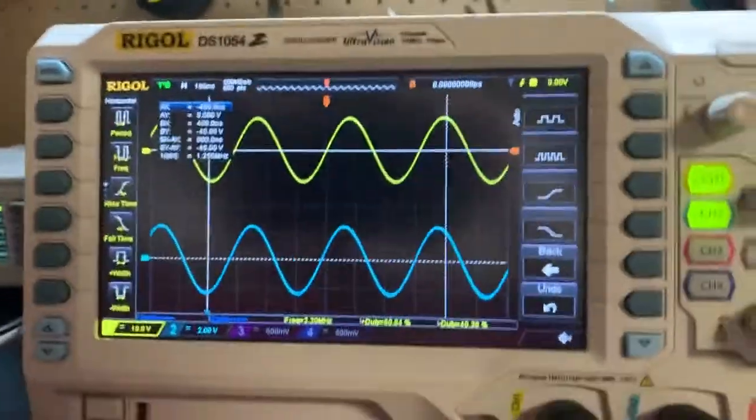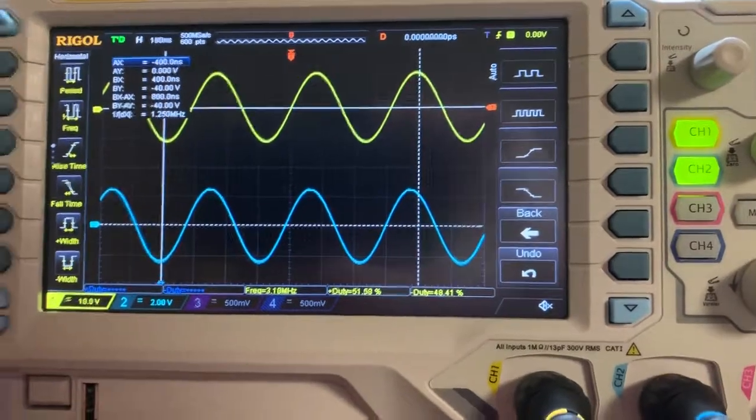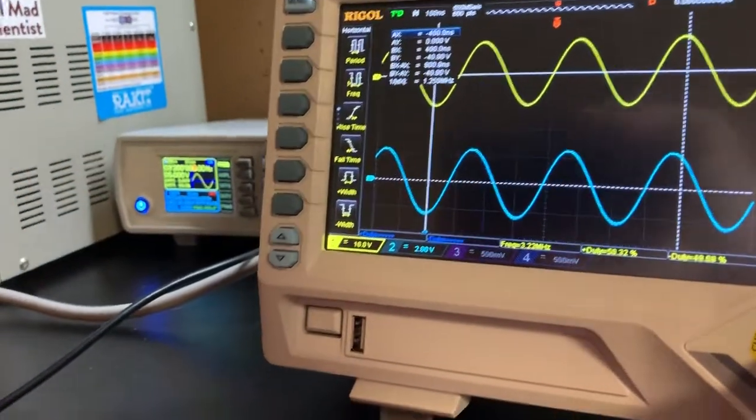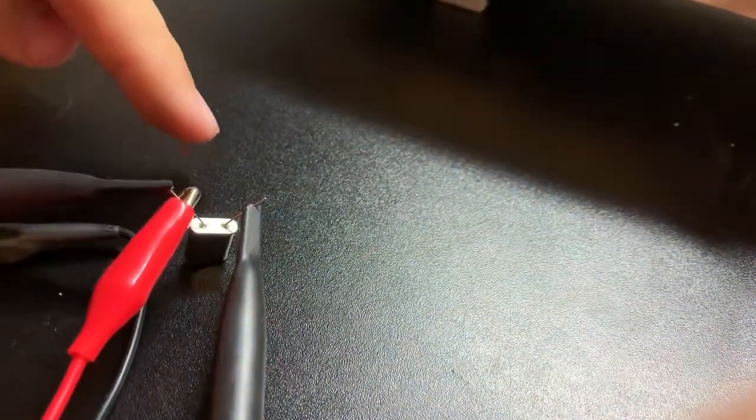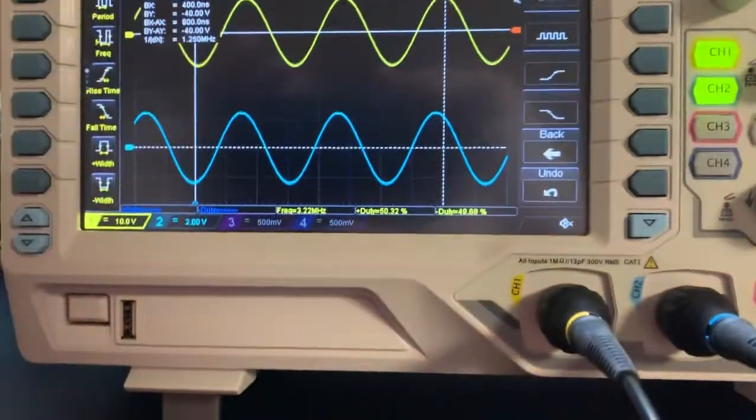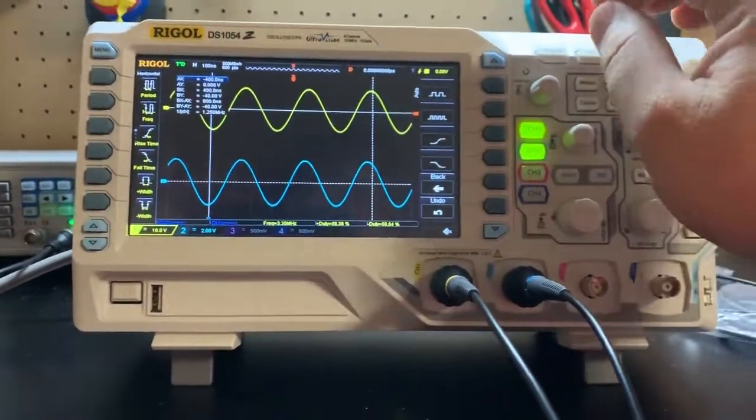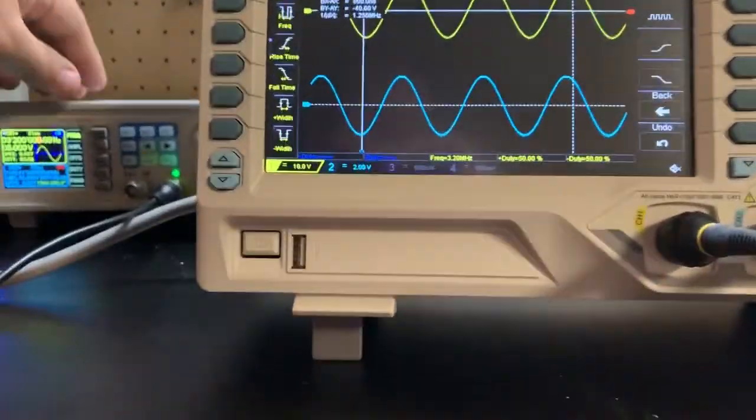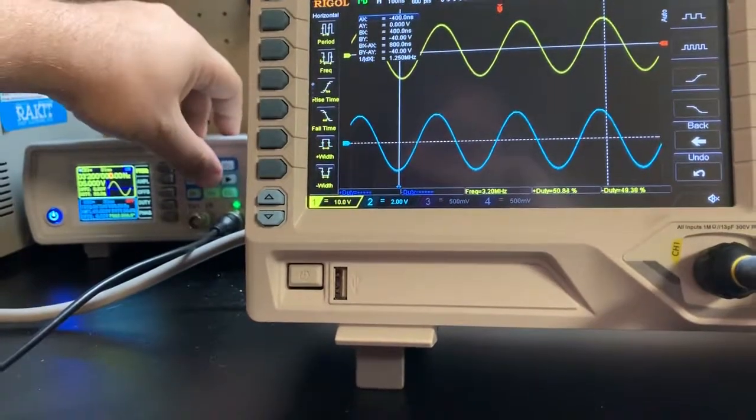So what happens is when you get closer to the actual frequency that you're passing through your signal generator or coming from the signal generator that you're passing through the crystal, an interesting effect happens where the voltage actually increases. And I'll show you right now. Let's go to the frequency. We're already on the frequency, but I can change.